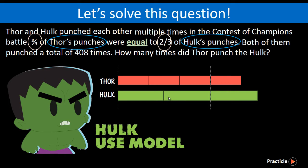What else do we know? We know that both of them punched a total of 408 times. So let's label it here. Our model is done — or is it?